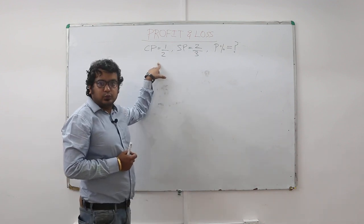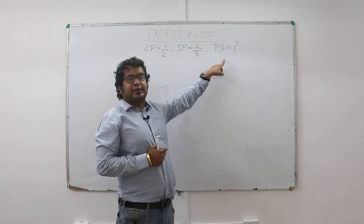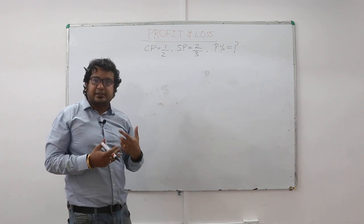Cost price is 1 by 2, selling price is 2 by 3, and you need to find out the profit percentage. So let's revisit the learning that we had in school.